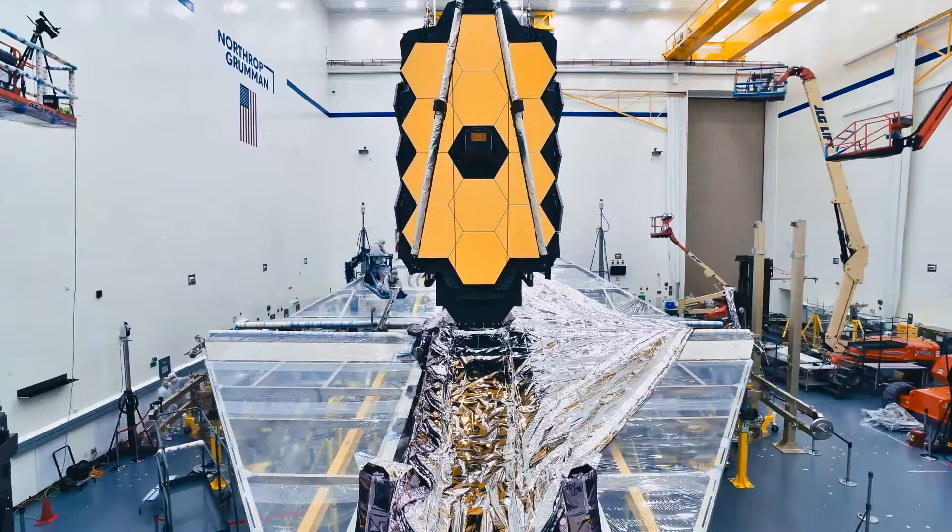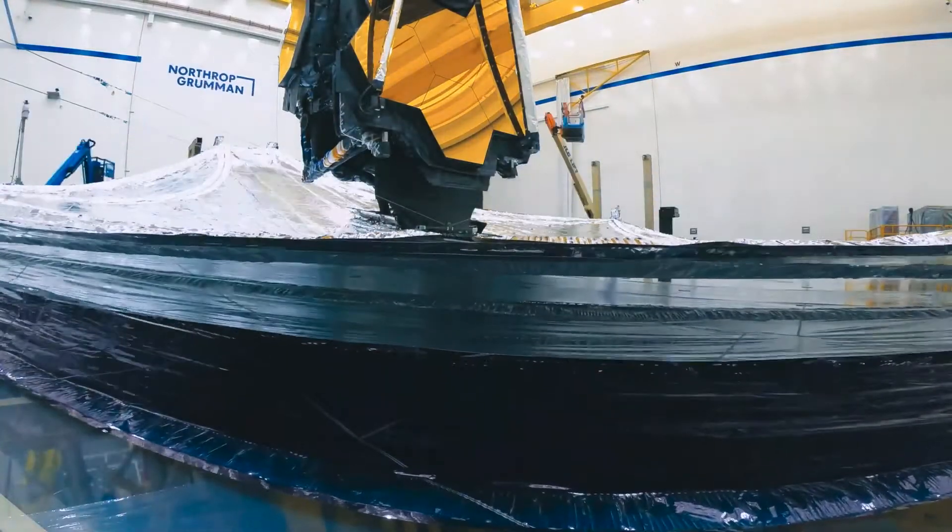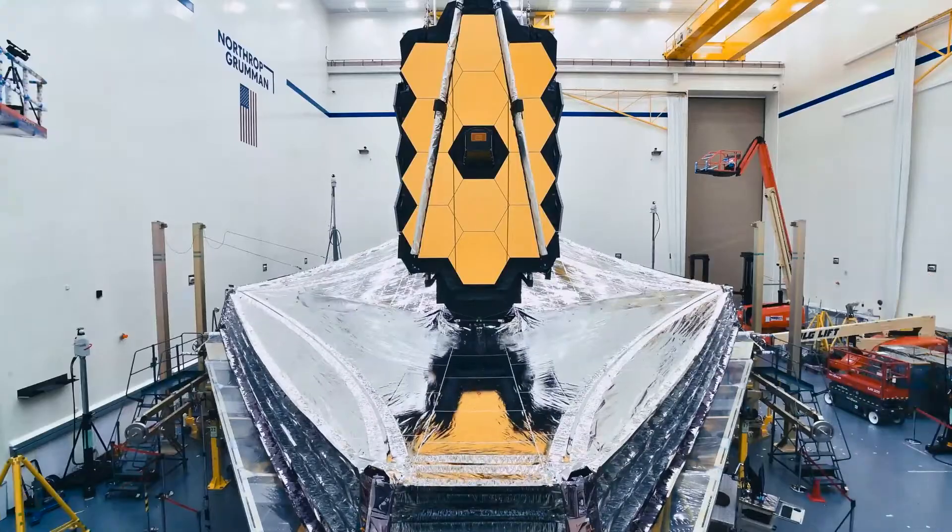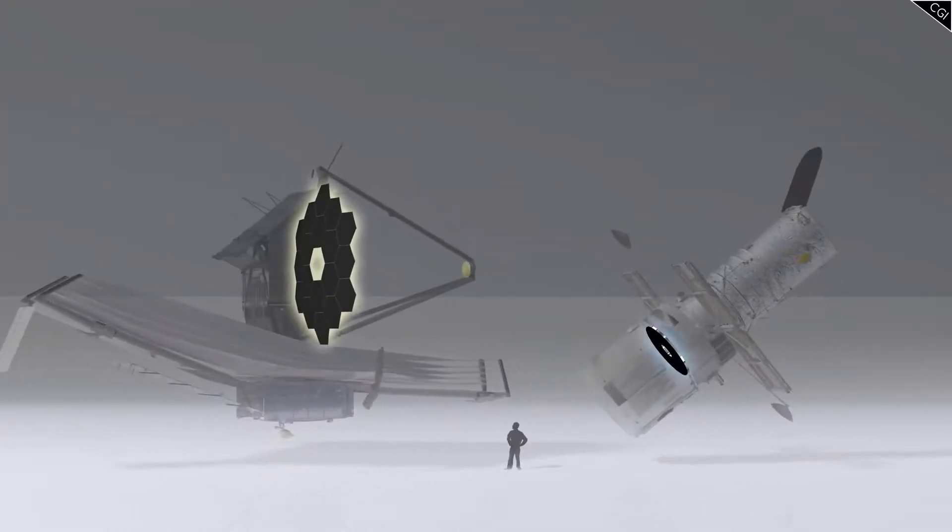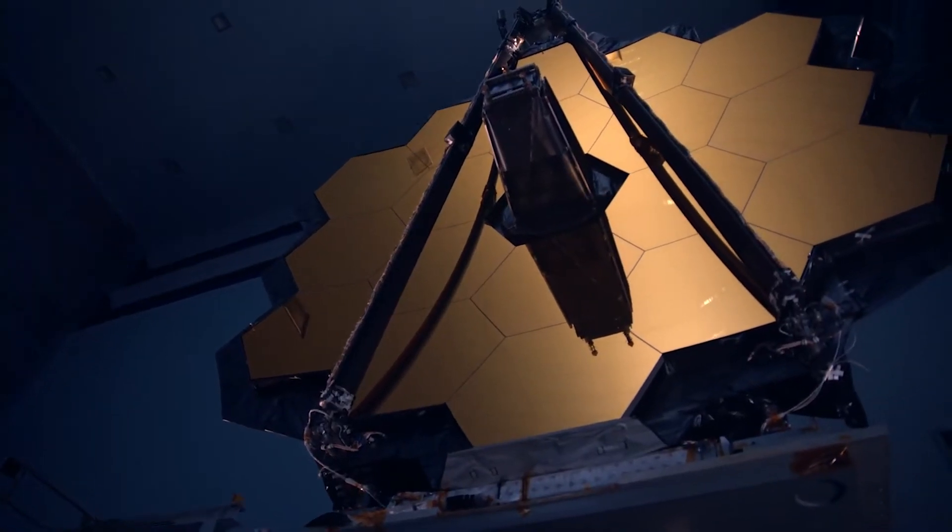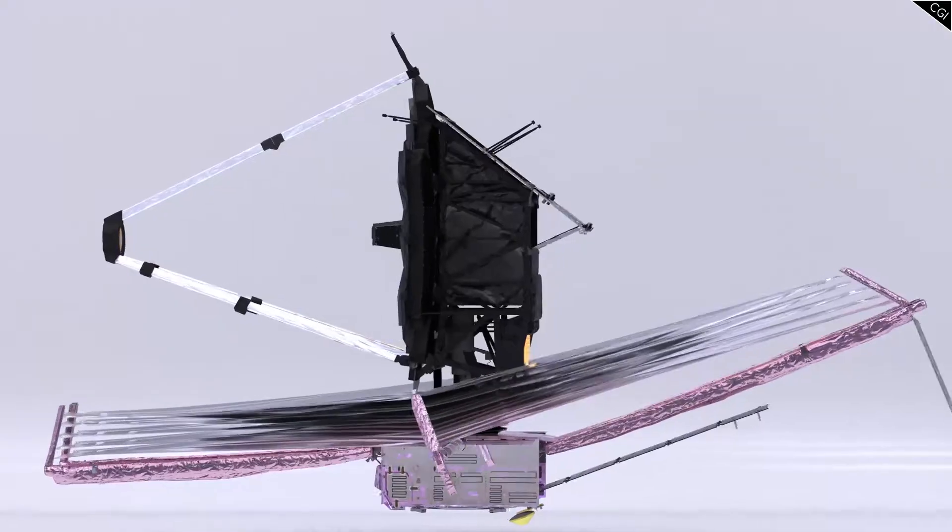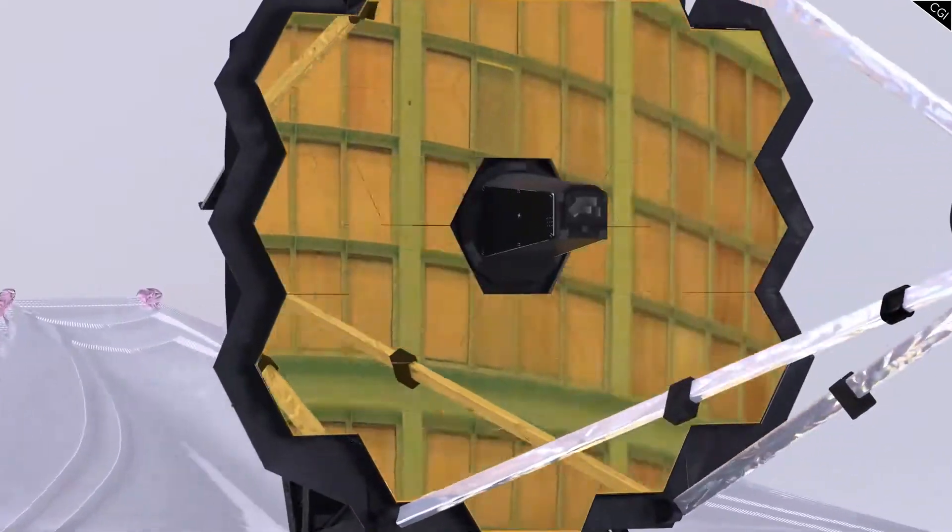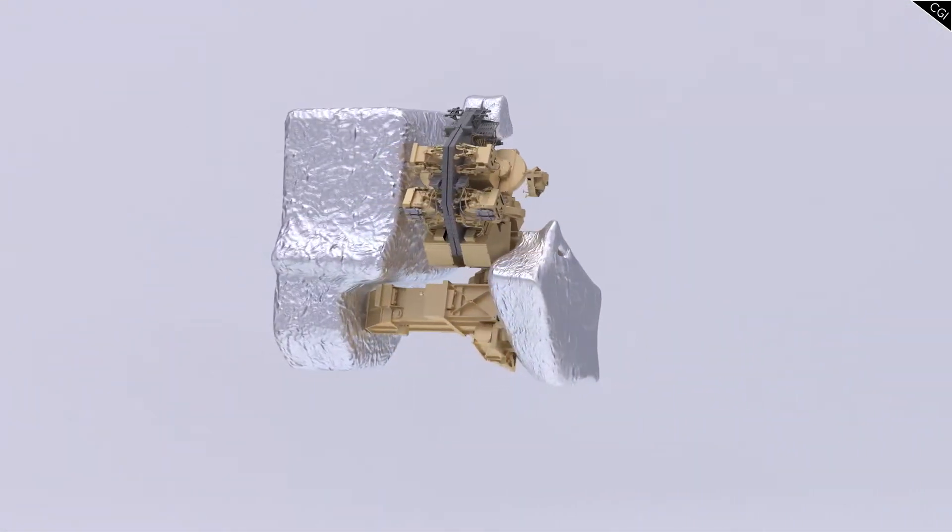It is a 6,500kg monster, with a sunshield whose 14x21m dimensions are around the size of a tennis court. Its mirror for capturing light is six times larger by area than Hubble's lens, which allows it to pick up more photons from further away to create crisp images. It boasts numerous cameras and scientific instruments which allow it to see across the infrared spectrum. This is a feature that is vital to its unique mission.